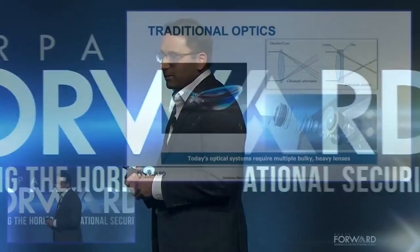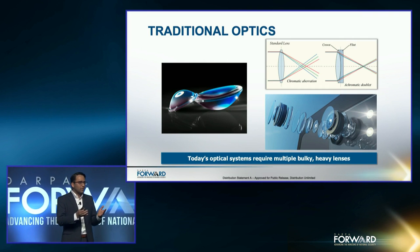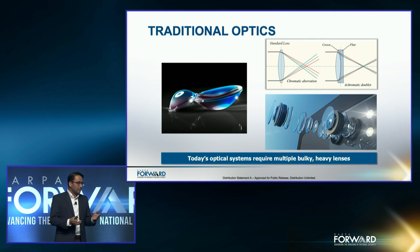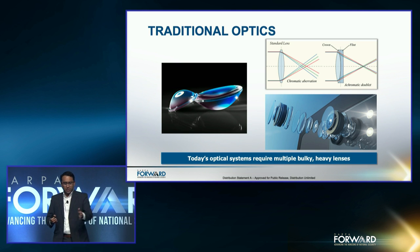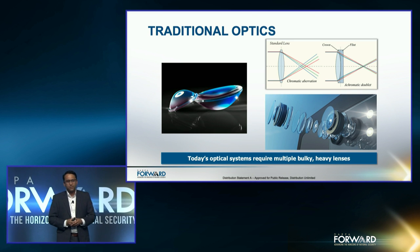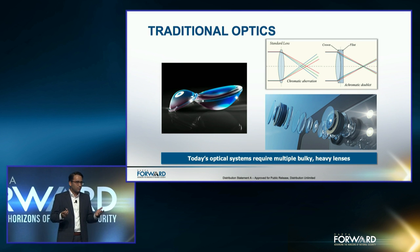Everyone in the room today works with optical lenses on a daily basis. It's the basic component that builds up the camera in each and every one of your smartphones sitting in your pocket. The lenses in that camera and in a lot of the cameras we use in the DOD look pretty similar to what you see on the left hand side — glass lenses that are bulky, especially as we grow them in size, and they look pretty similar to the lenses that Galileo used in his telescope built 400 years ago.